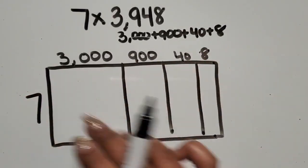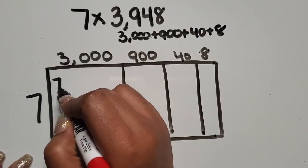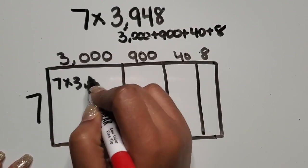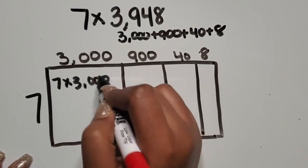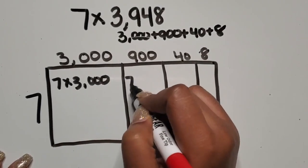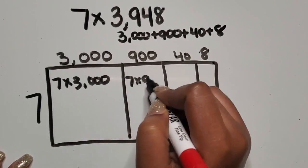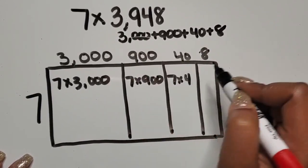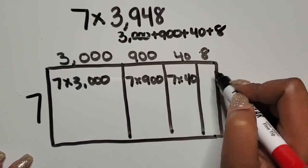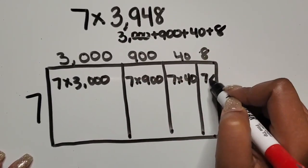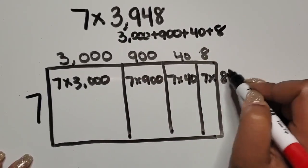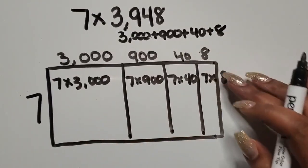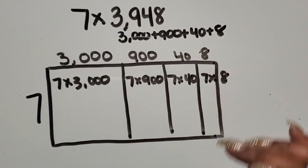I'm going to write the expression for each of these factors in the rectangle. So I have seven rows of three thousand, seven rows of nine hundred, seven rows of forty, and seven rows of eight. It's okay that it goes outside, as long as the students know what we're representing.